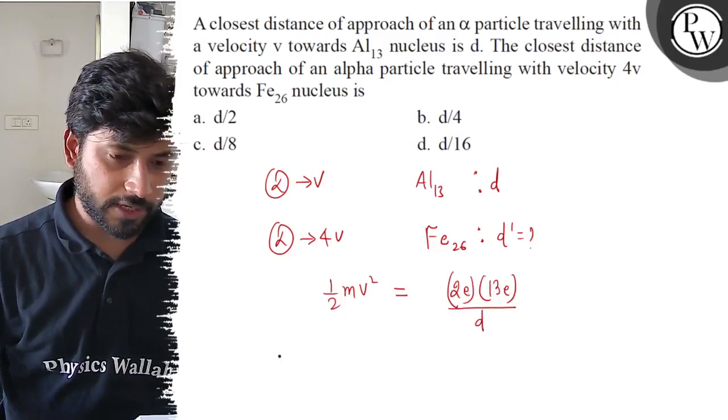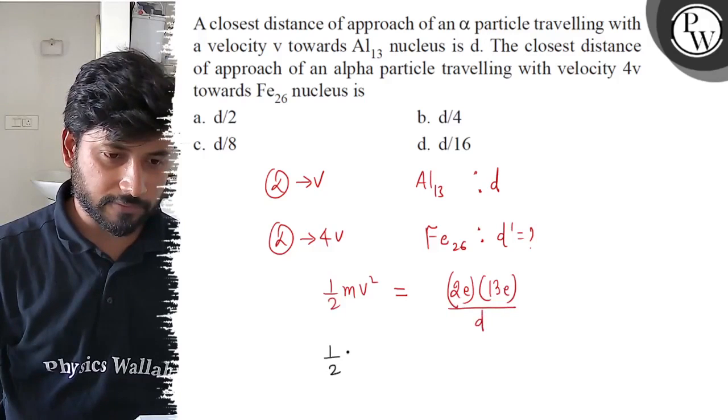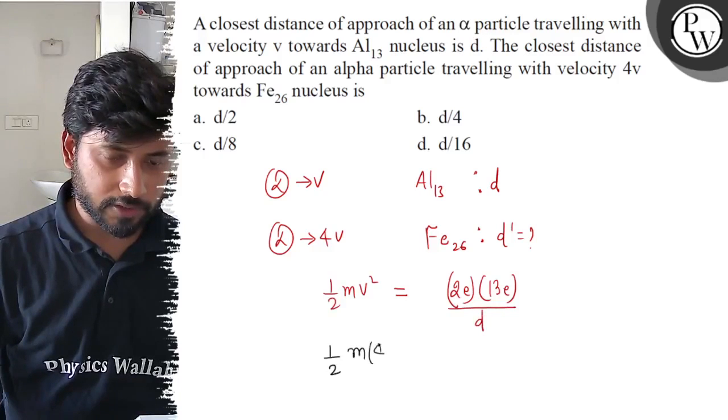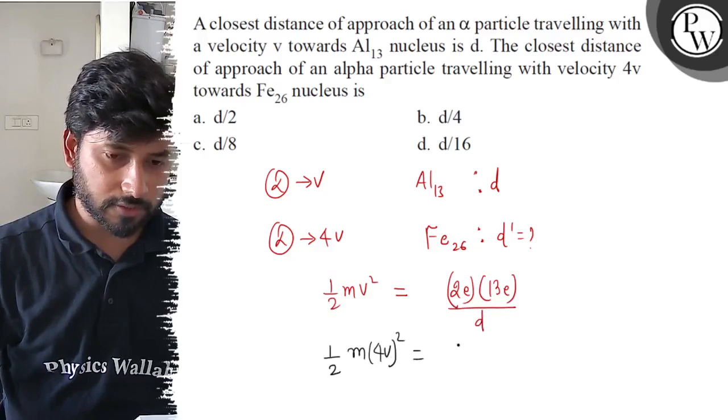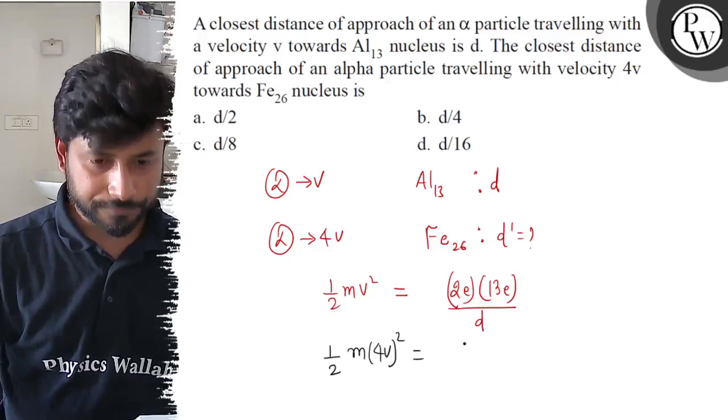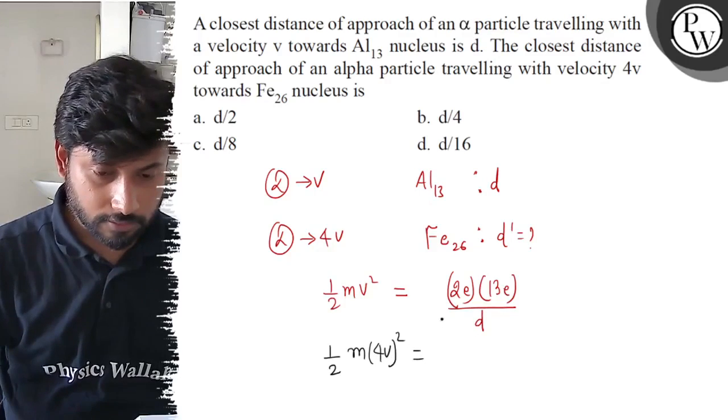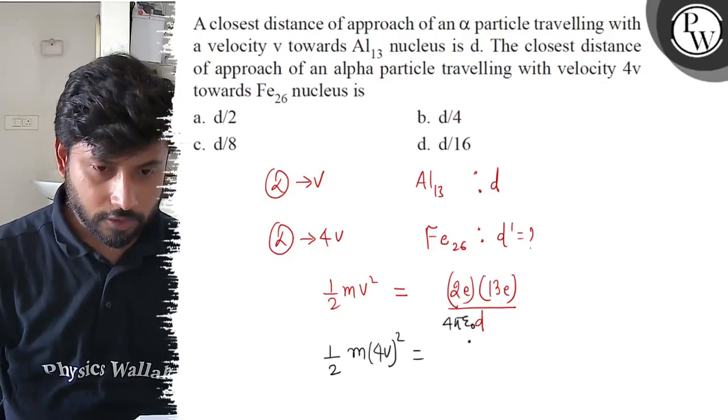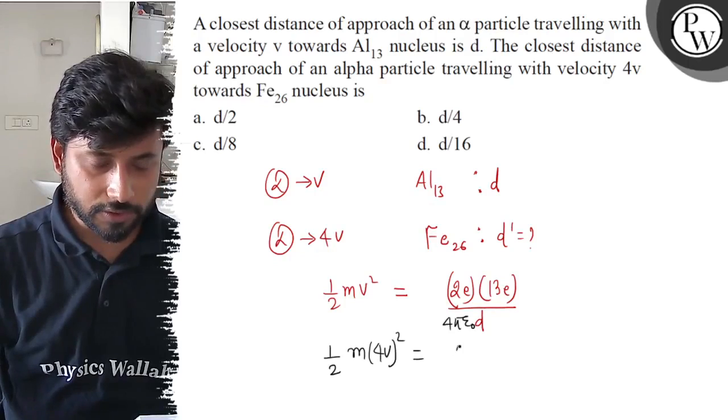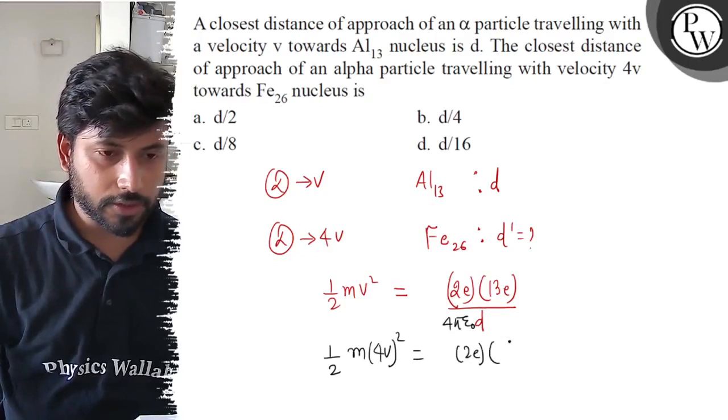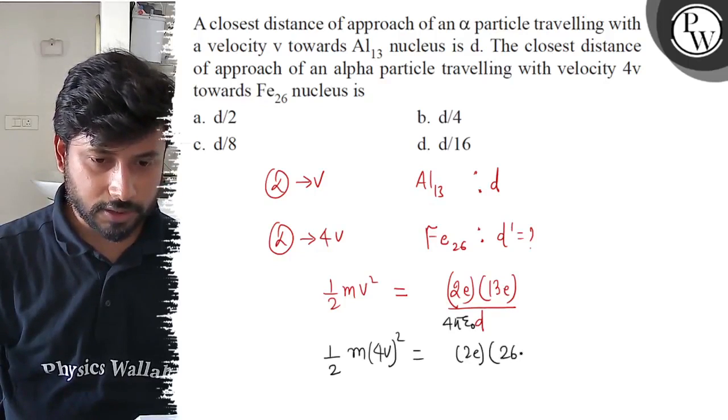In the other case, the distance of closest approach will be half m and velocity is 4V. K2 equals Q1 Q2, where Q1 is 2e and Q2 is 26e divided by 4π epsilon_0 D'.